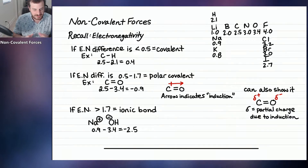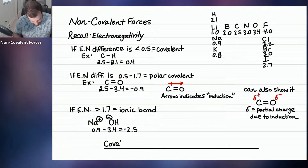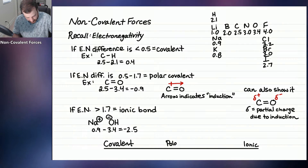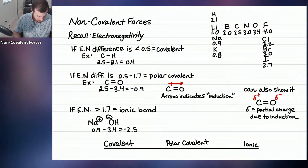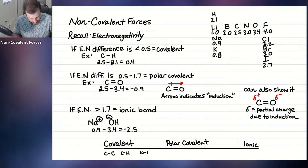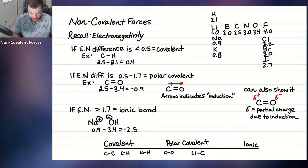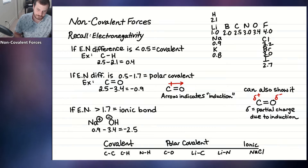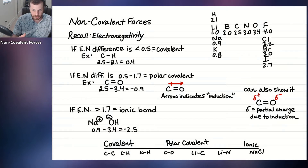The more accurate picture is: covalent on one side of the spectrum, ionic on the other, and polar covalent somewhere in the middle. A carbon-carbon bond is purely covalent; carbon-hydrogen is slightly polar covalent; nitrogen-hydrogen is more polar; carbon-oxygen more still; lithium-carbon gets into ionic territory; lithium-nitrogen is more ionic; and NaCl is almost purely ionic. We'll use the hard ranges in this class for simplicity.